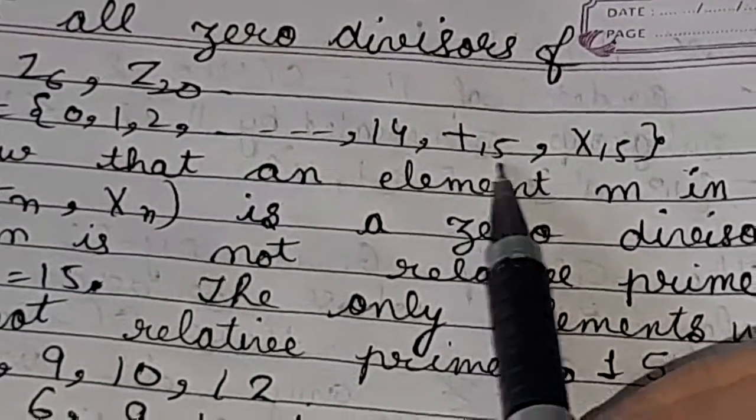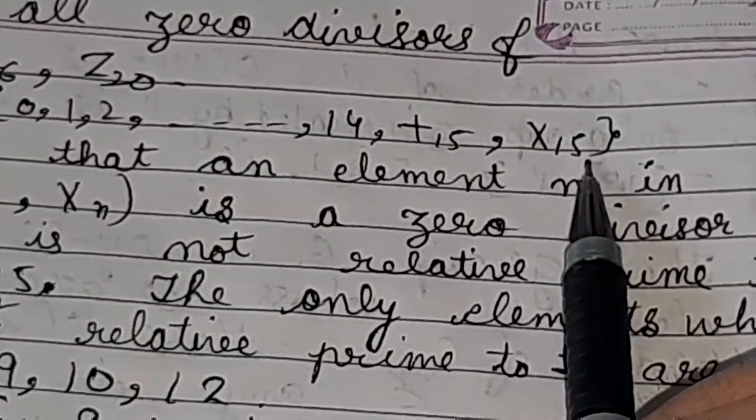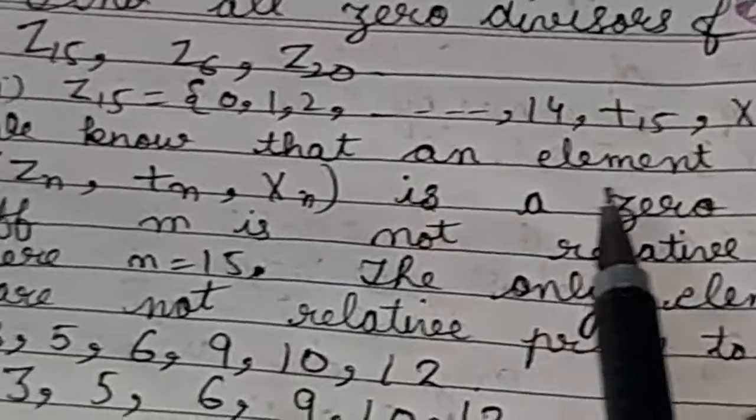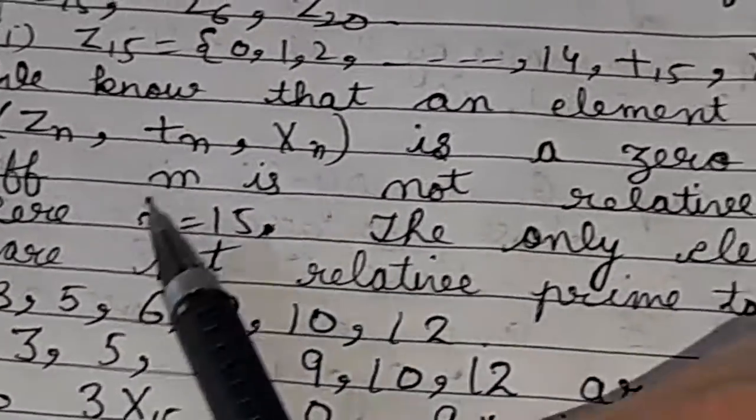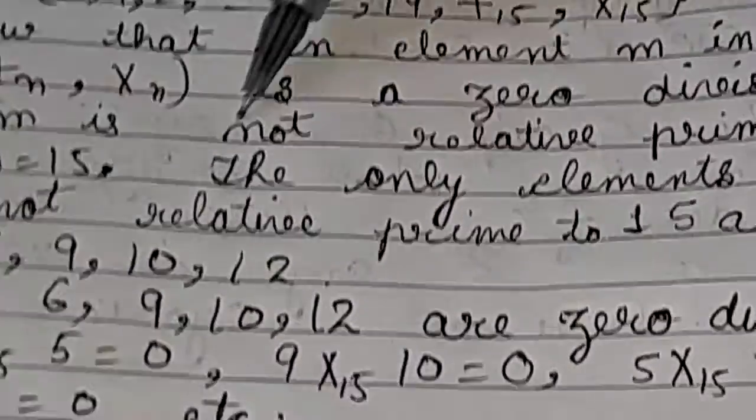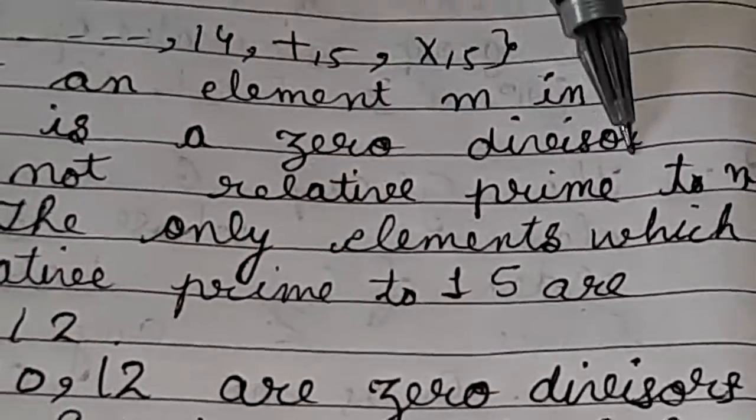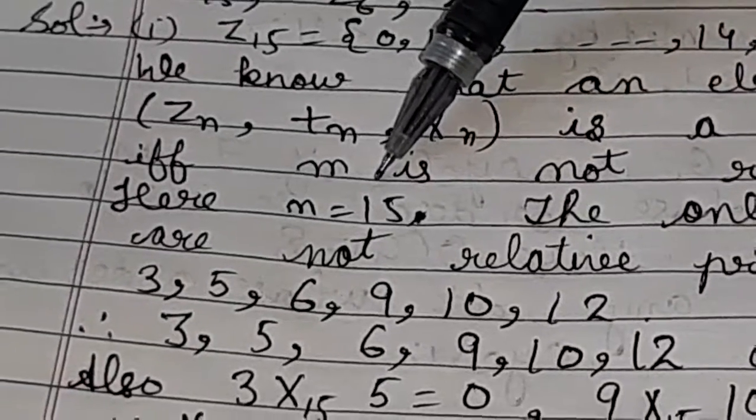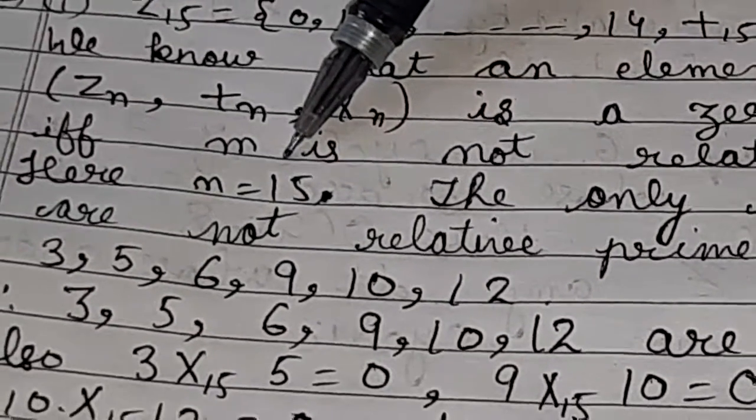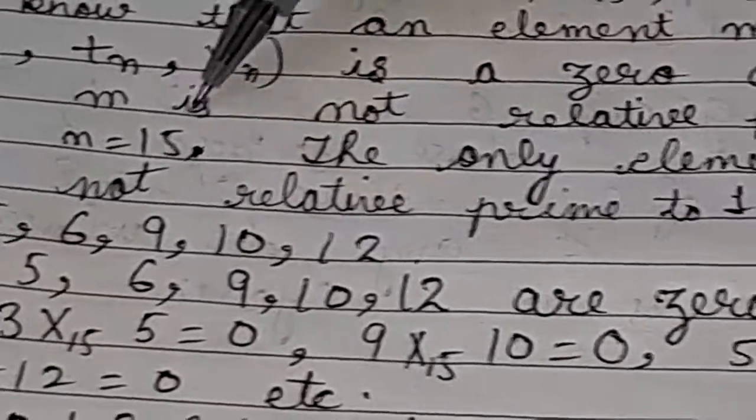Plus modulo 15, multiplication modulo 15. We know that an element m in zn is a zero divisor if and only if m is not relatively prime to n. Here n is 15 means we have to find the elements which are not relatively prime to 15.